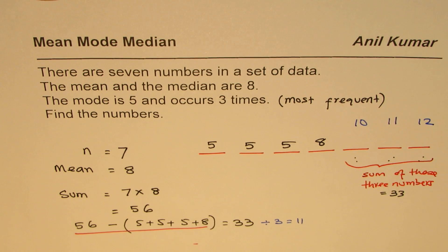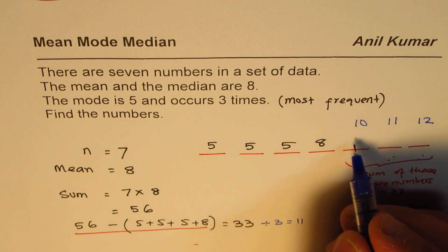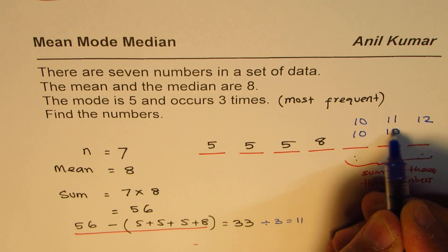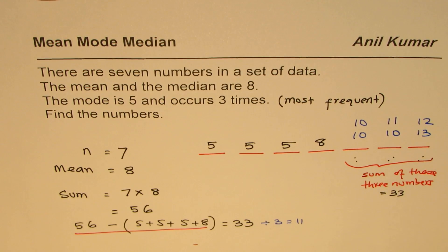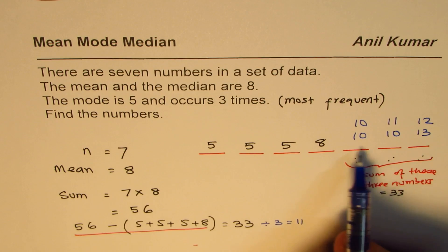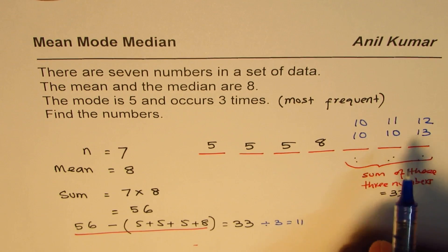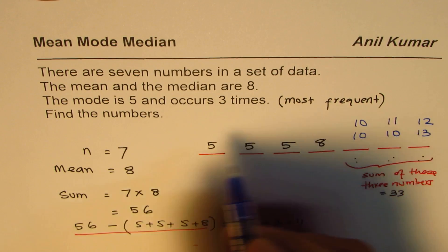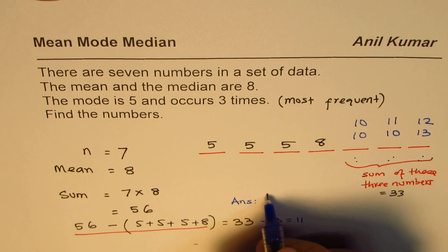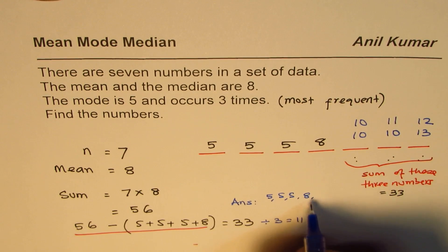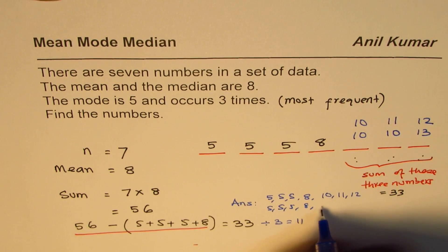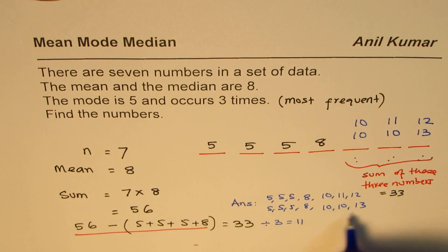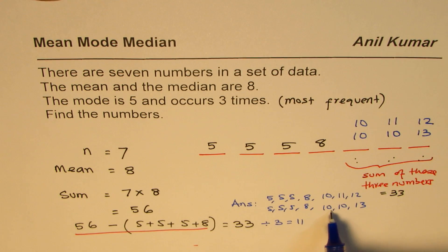Since 11 is the mean of those three, the numbers could instead be 10, 11, 12 — that works. Another combination: take 10 twice, which gives 20, and we need 33, so the third number would be 13, giving 10, 10, 13. So the seven numbers could be three fives, eight, and 10, 11, 12 — or three fives, eight, and 10, 10, 13.